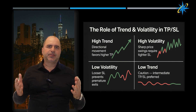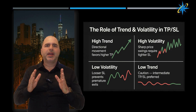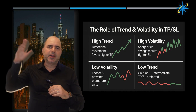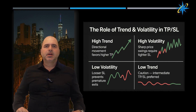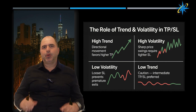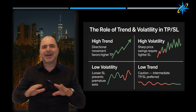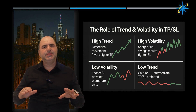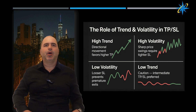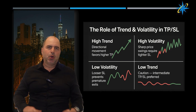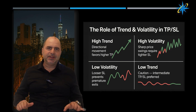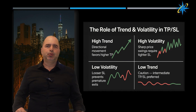If the trend is strong, you can aim for a higher TP — the move has momentum. If volatility is high, keep your SL tight, as price swings can wipe you out. Low volatility means you can loosen your SL to avoid early exits.